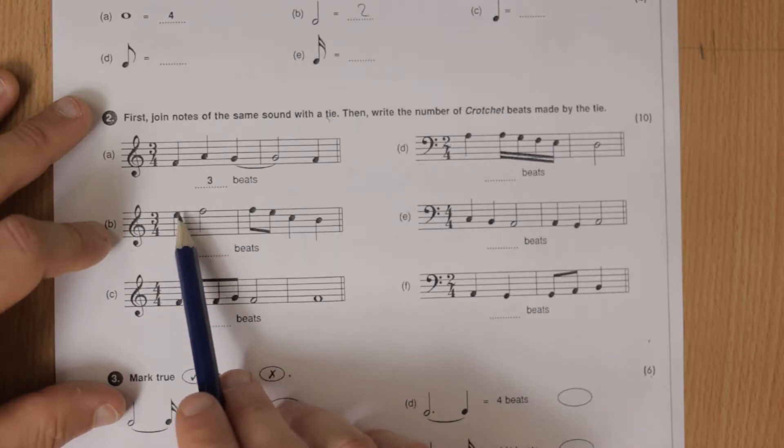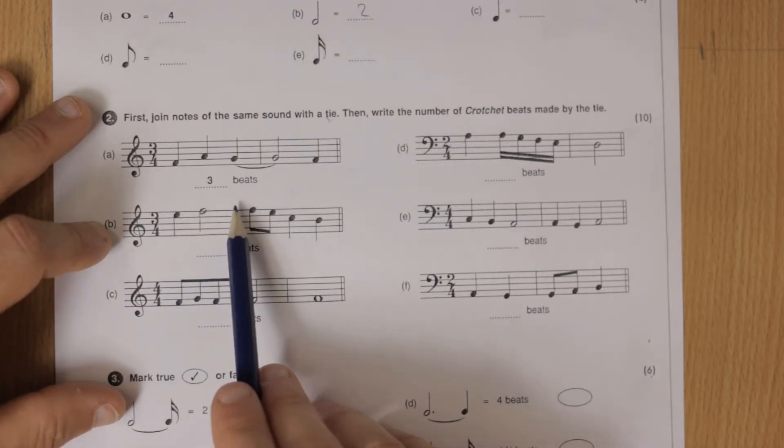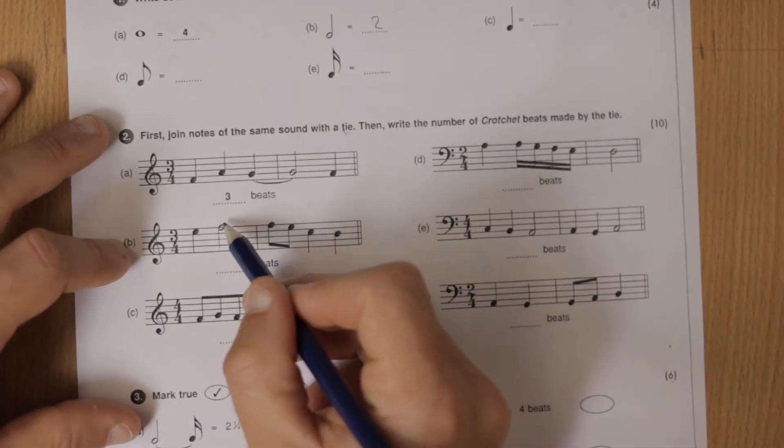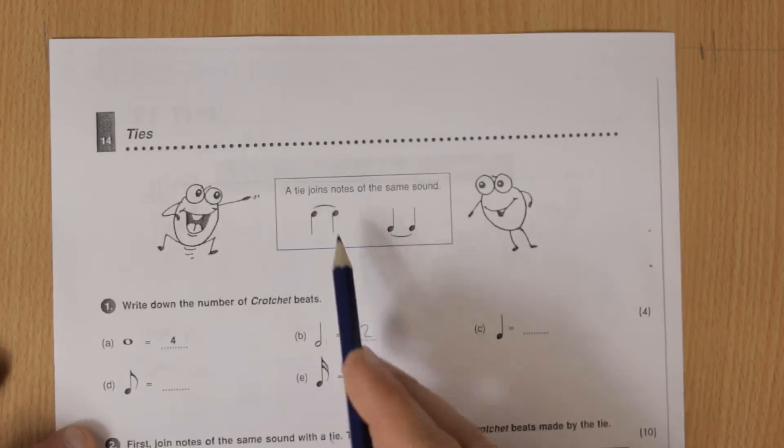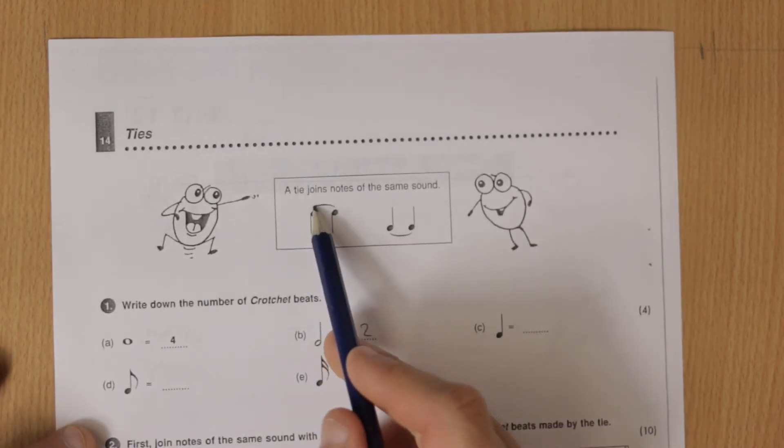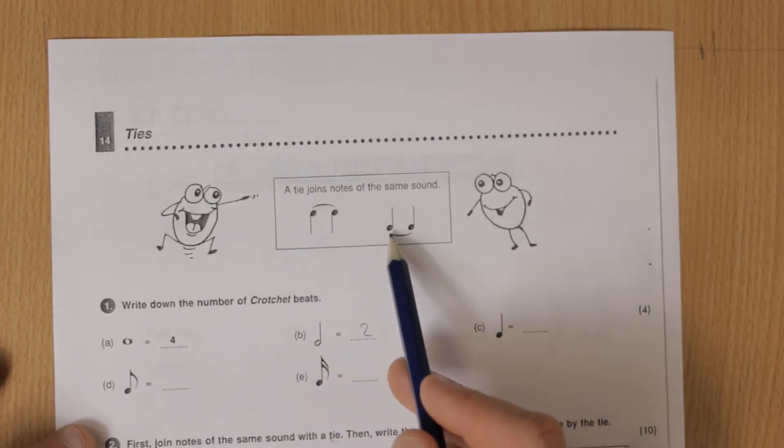So these aren't the same pitch, that goes up one. These are the same so we need to do a tie. So if the stems are coming down like here, the stems are coming down, we want to draw the tie above. If they're going up we do it below.